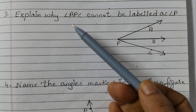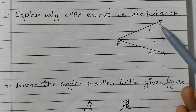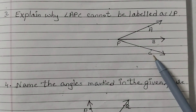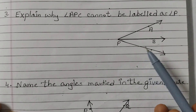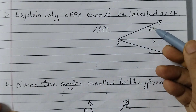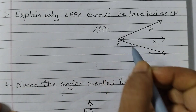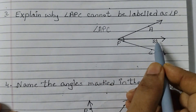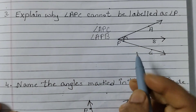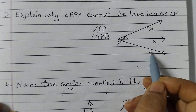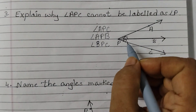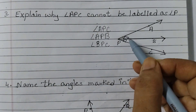Question number 3: explain why angle APC cannot be labelled as angle P. So why can angle APC not be labelled as angle P? If you look at the figure, we have angle APC — this big angle here. Then we have angle APB — this angle here. And then we have angle BPC — this small angle here. So in total we have 3 angles: this big angle and 2 small angles.